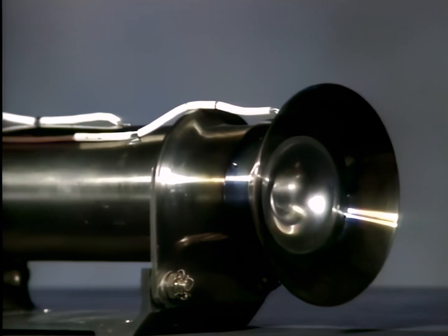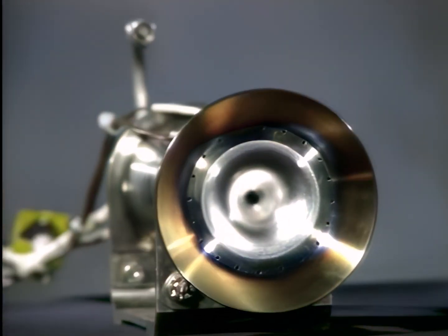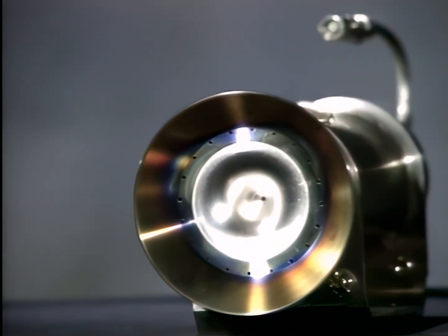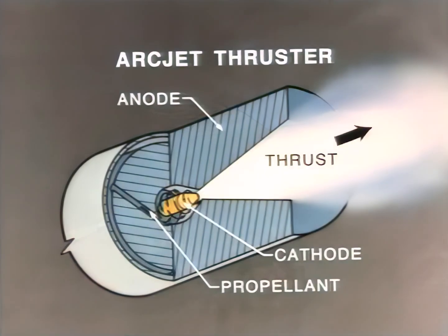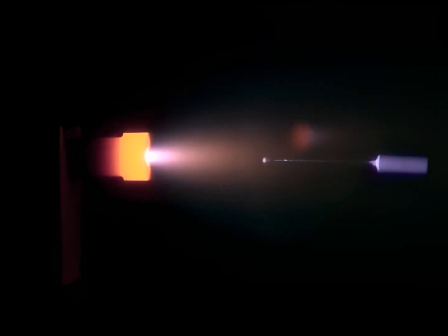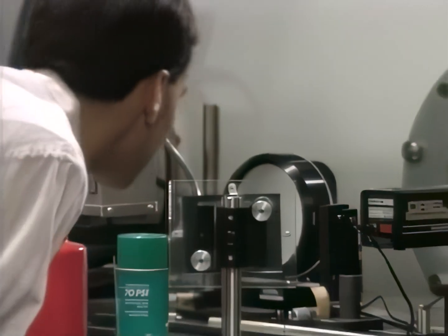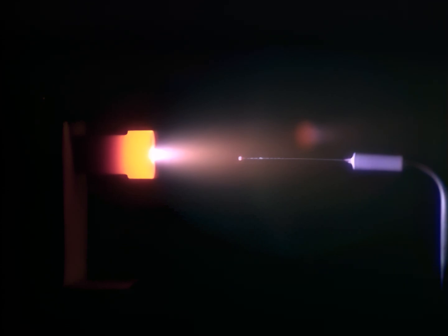A version of the resistojet which uses waste gas from the station modules as the propellant is being developed for drag makeup on Space Station Freedom. In arc jets, the propellant is heated by an electric arc and is then expelled through a nozzle. Arc jets which use about 1 kilowatt of power and hydrazine propellant are under intense development for station keeping on commercial geosynchronous satellites.